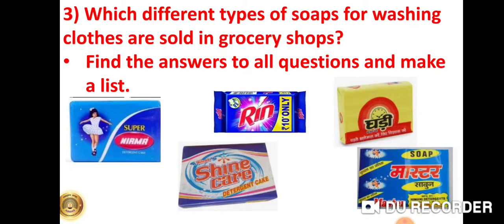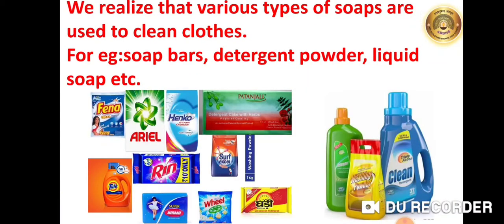Which are the different types of soaps for washing clothes sold in grocery shops? We either find an Irma soap, or we find Rin, Ghadi, Shinecare, or Master. There are various other soaps also available in the shop. We realize that various types of soaps are used to clean clothes — different soap bars, detergent powders, or liquid soaps that we use to keep our clothes clean.